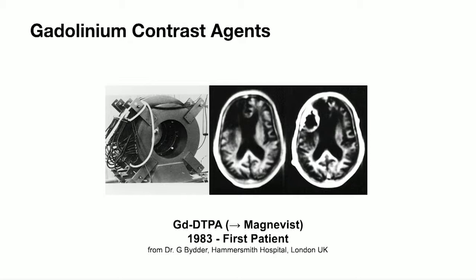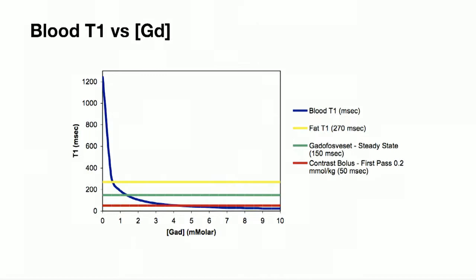The main standby in MRA has been contrast with gadolinium-based contrast agents. These were first shown to be useful in 1983 — the first patient with Graham Bidder back at Hammersmith Hospital in London with a brain tumour. What we want to do is drive the T1 of blood right down below that of the background tissue, particularly fat.